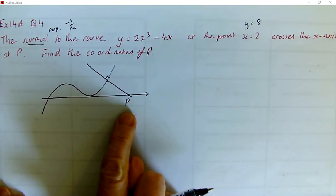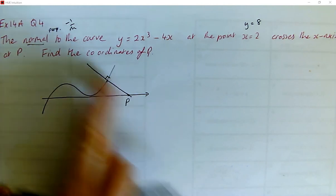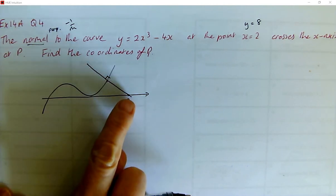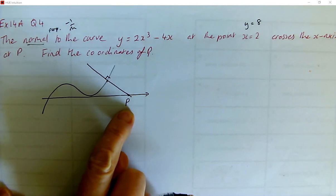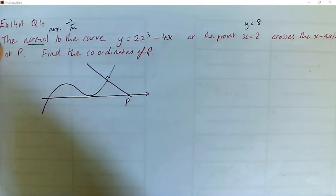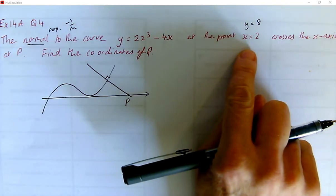So that means that we need to know what is the equation of the normal so that we can find out where it crosses the x-axis. So essentially this question is find the equation of the normal where x is 2.